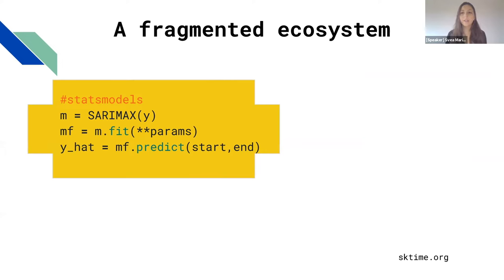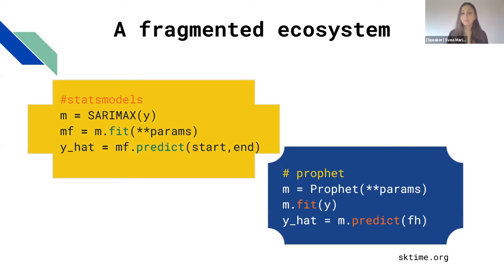The stats models workflow has you specify the model, pass data at initialization, fit with additional parameters, then call predict with start and end values. On the other hand, Prophet — an algorithm developed by Facebook — has you specify the model with parameters at initialization, call fit passing the actual data, then pass a forecasting horizon in predict specifying the indices where you want predictions.